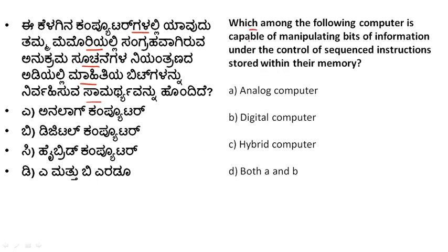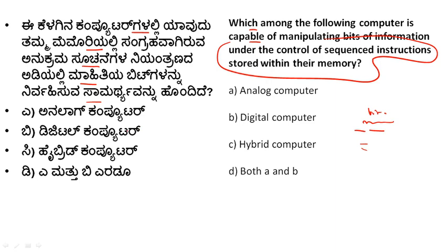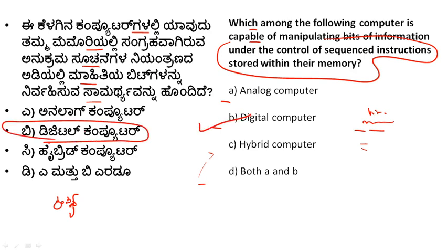Which of the following computers is capable of manipulating bits of information under the control of a sequence of instructions stored in memory? Options: Digital, Hybrid, Analog, both A and B. The correct answer is Digital computer. Hybrid is analog plus digital combined.